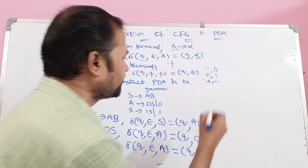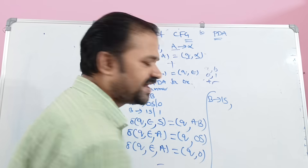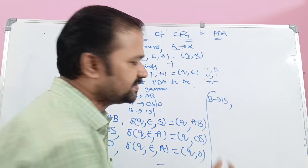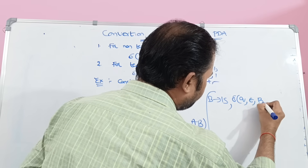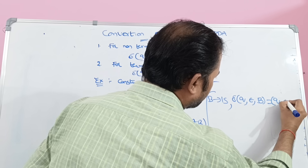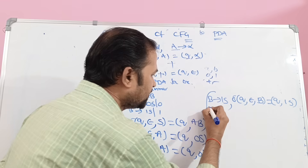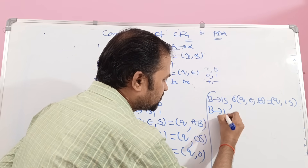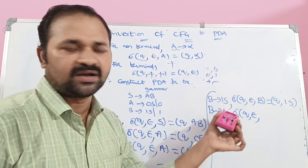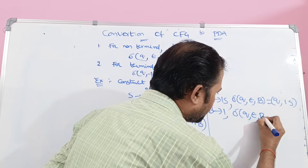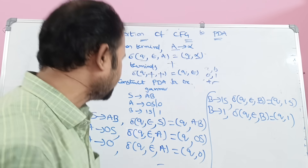Next production is B implies 1S. For this, we can write it as delta of (Q, epsilon, B) = (Q, 1S), where 1S is the right-hand side of the production. For the last production, B implies 1, this can be written as delta of (Q, epsilon, B) = (Q, 1), where 1 is the right-hand side of the production. So for all the productions, we have written the corresponding transition functions.